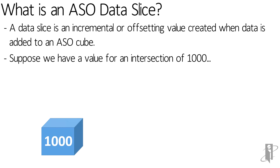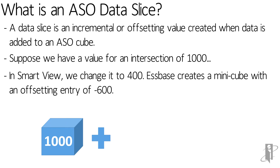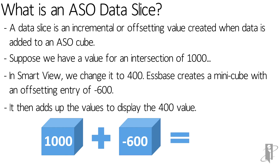Suppose we have a value for an intersection of 1000. In Smart View, if we change it to 400, Essbase creates a mini cube with an offsetting entry of minus 600. It then adds up those two values to display back to the user the value of 400.